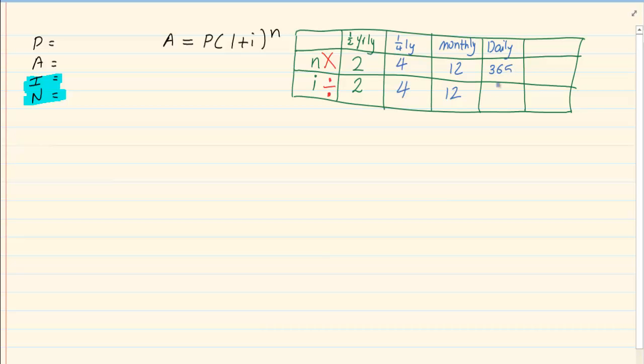And in a standard question, daily is considered 365 unless it is stated that it is more than 365. So in other words, they tell you work a year out to be 366. But if they do not say that, we accept daily as 365.